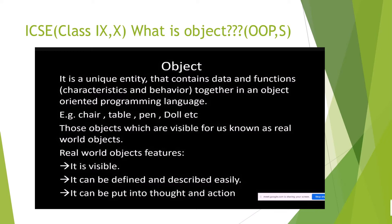Object oriented programming is compared with the real world. Every object has some characteristics and behavior. In object oriented programming, characteristics are compared to data and behavior is compared to functions. An object is a unique entity that contains data and functions — data compared to characteristics and functions compared to behavior — together in object oriented programming.